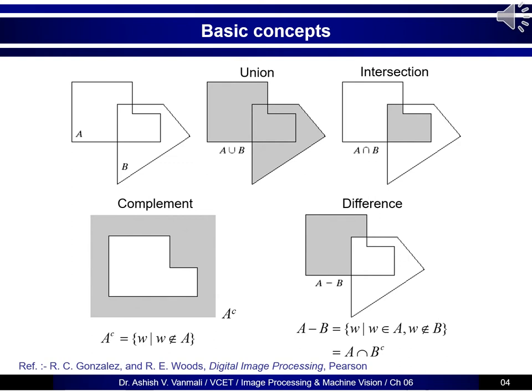We will require some basic concepts of set theory, which we extend for images. Let's consider two sets A and B — from an image perspective they are two components in an image. We can perform basic operations like union, intersection, and complement. The union of sets A and B will include all pixels which are either part of A or B. Intersection will be the common portion of set A and set B — all pixels common to both components.